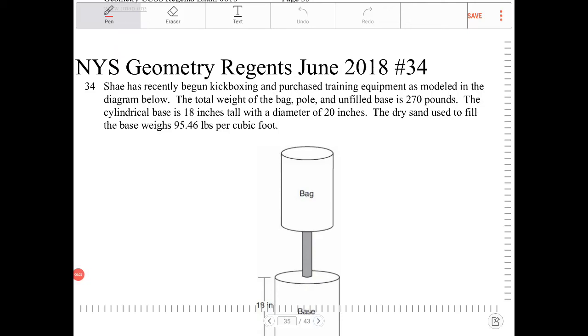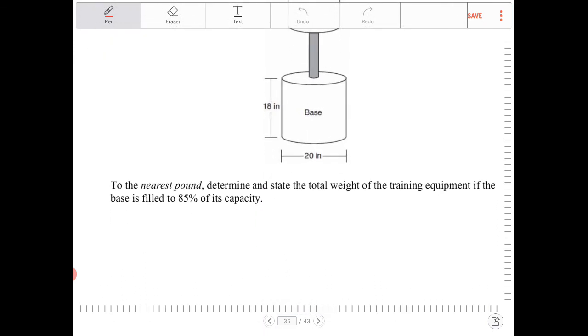Shea has recently began kickboxing and purchased training equipment as modeled in the diagram below. The total weight of the bag, pole, and unfilled base is 270 pounds. The cylindrical base is 18 inches tall with a diameter of 20 inches. The dry sand used to fill the base weighs 95.46 pounds per cubic foot. To the nearest pound, determine and state the total weight of the training equipment if the base is filled to 85% of its capacity.